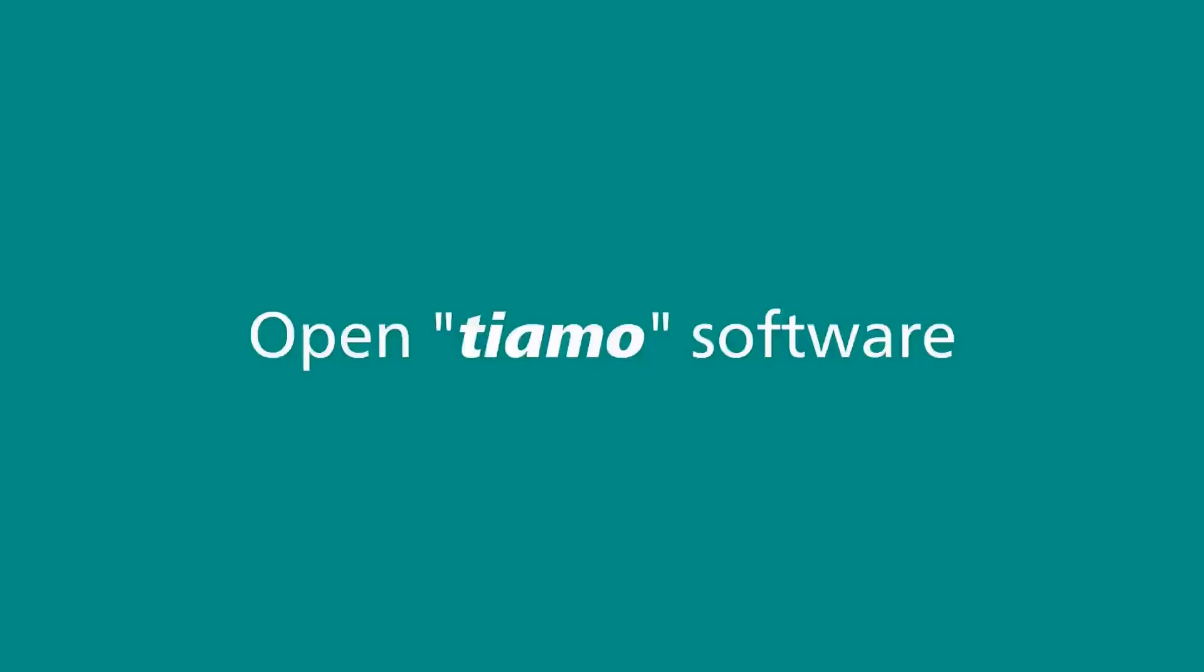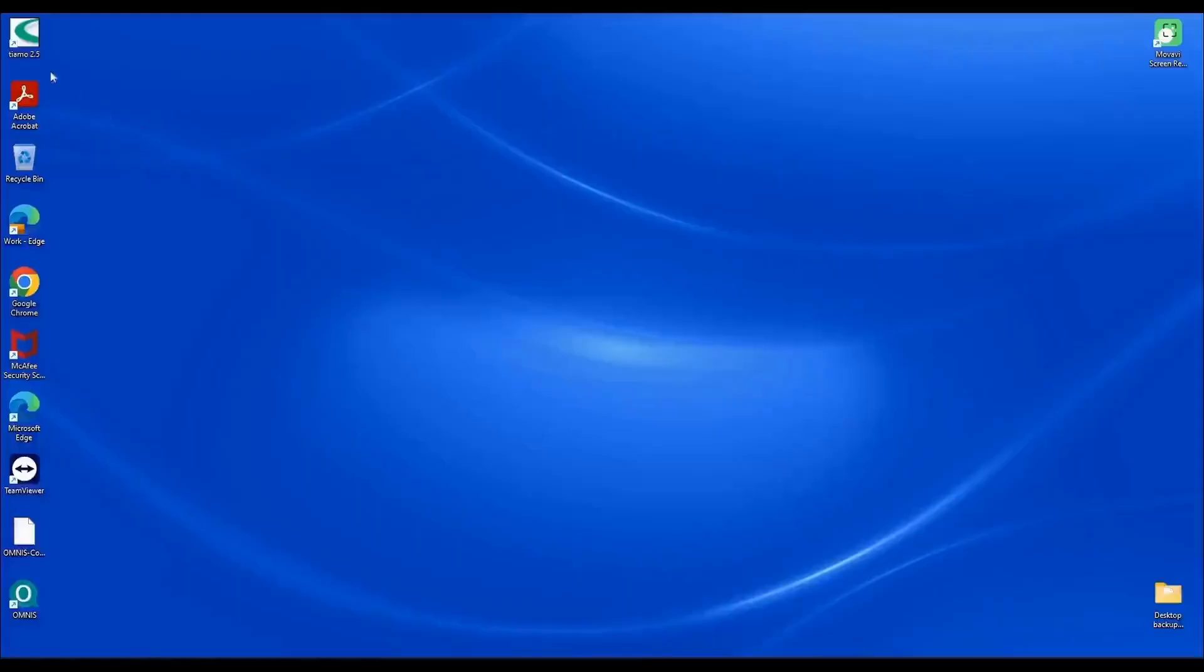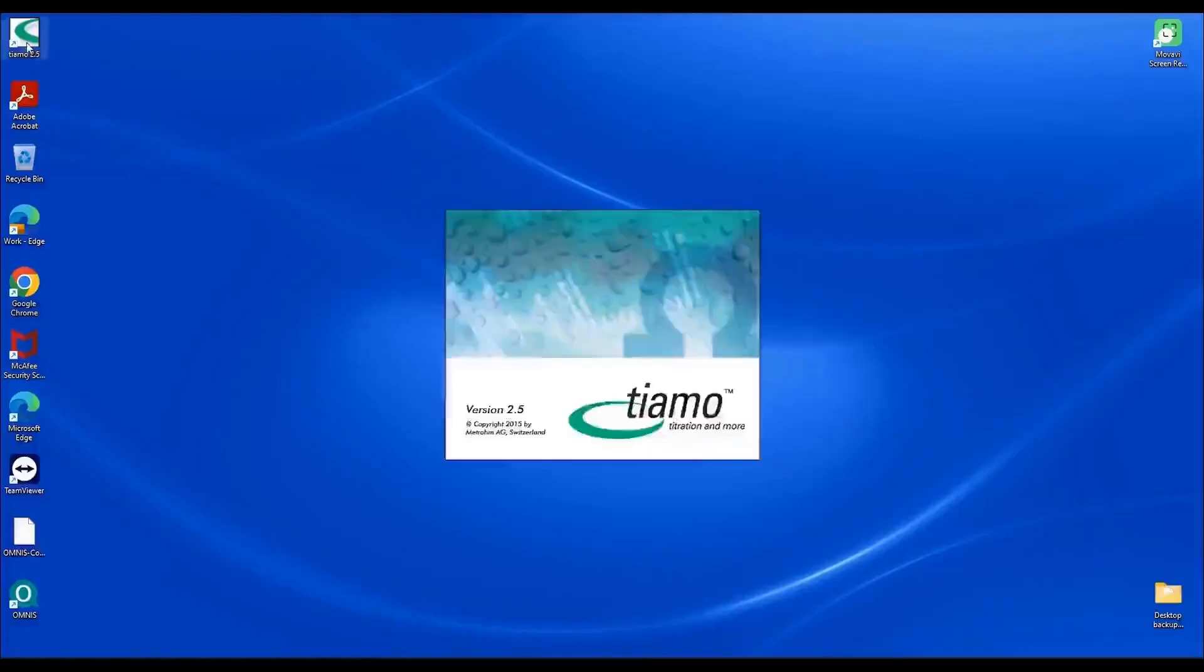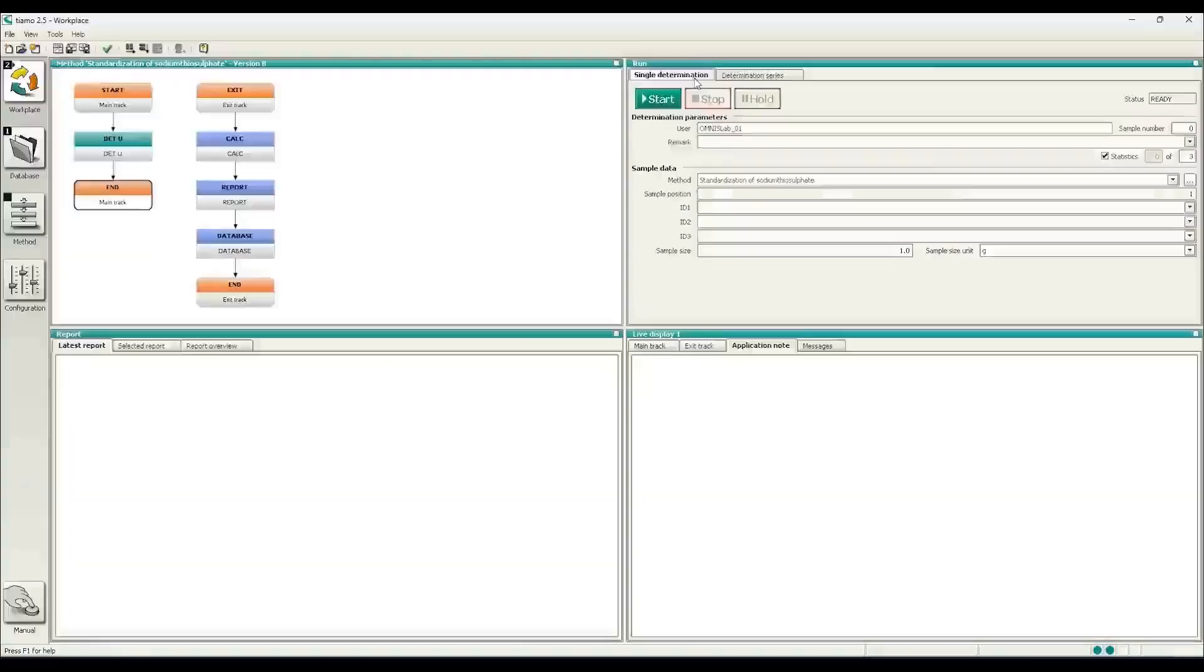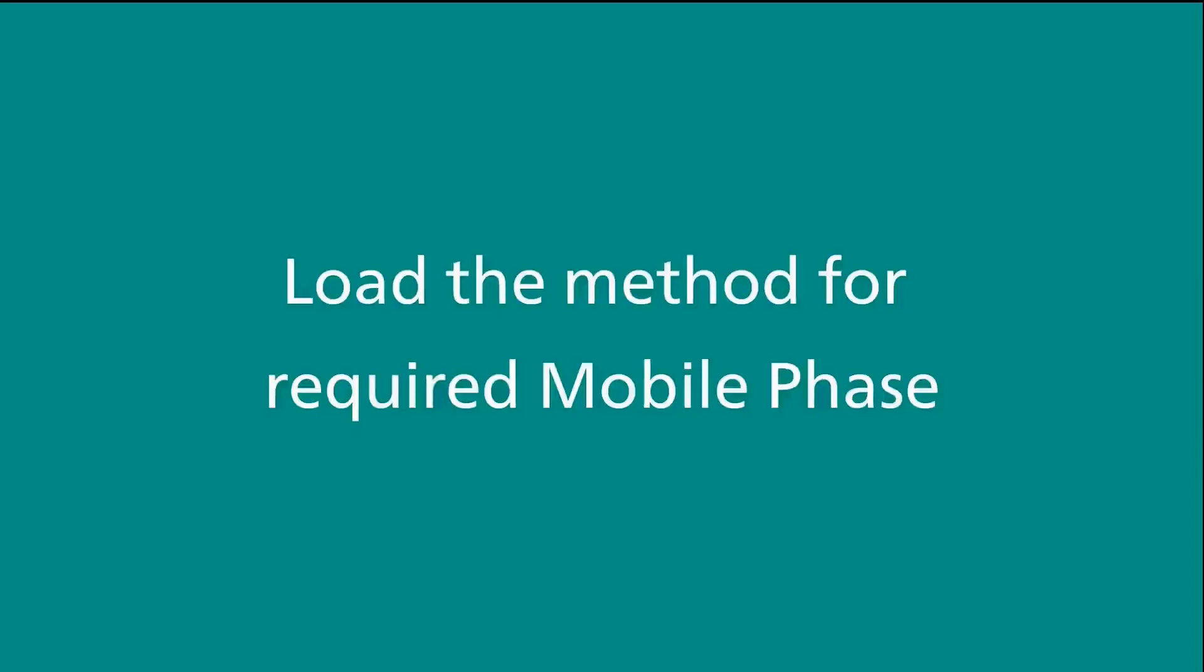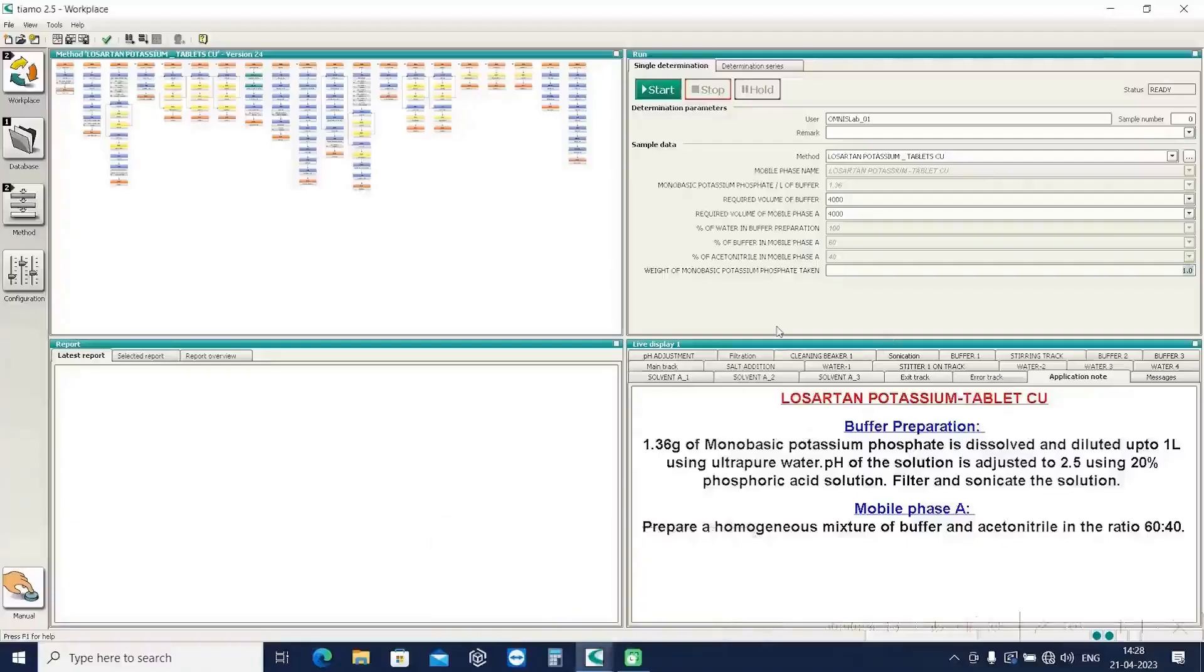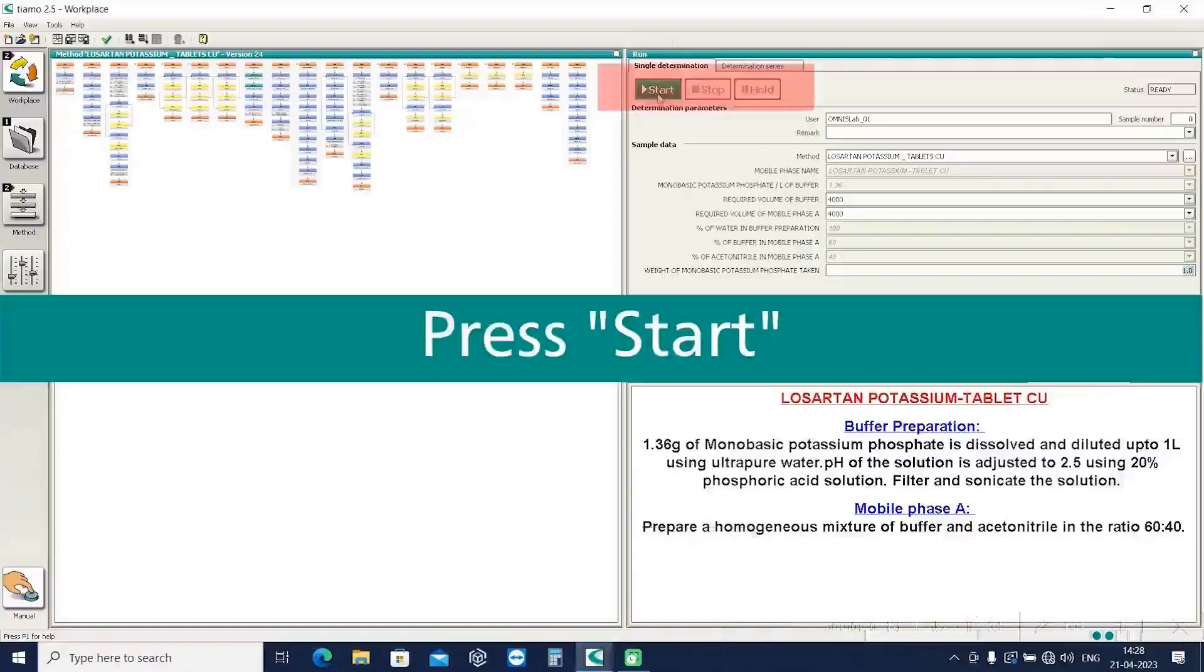Open Tiyama Software. Load the corresponding method for required mobile phase. Press the Start icon in the software window.